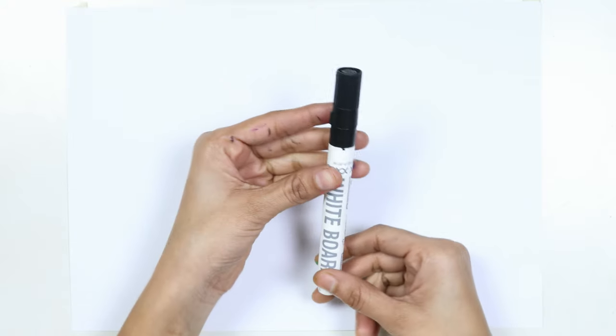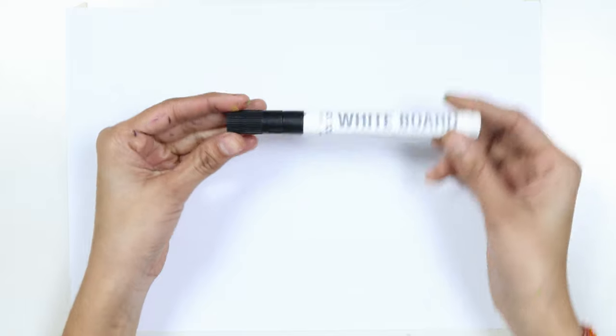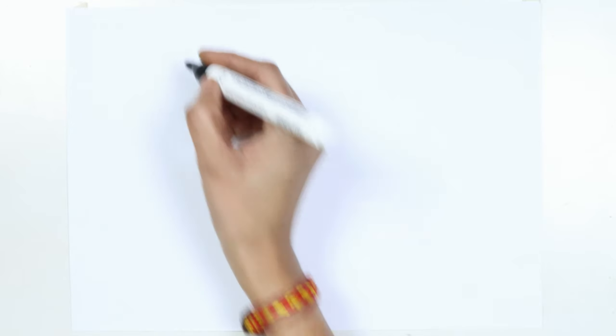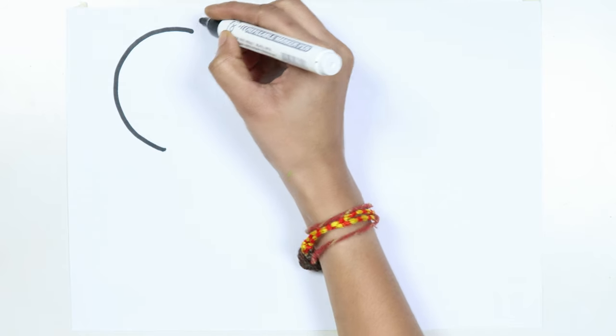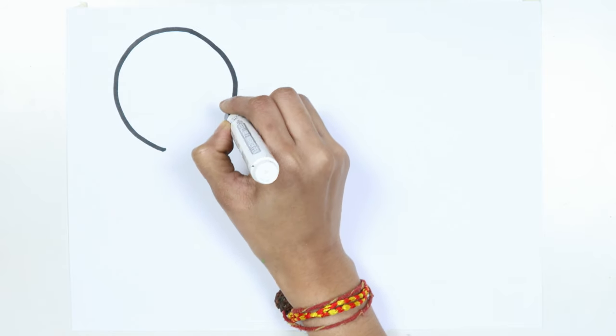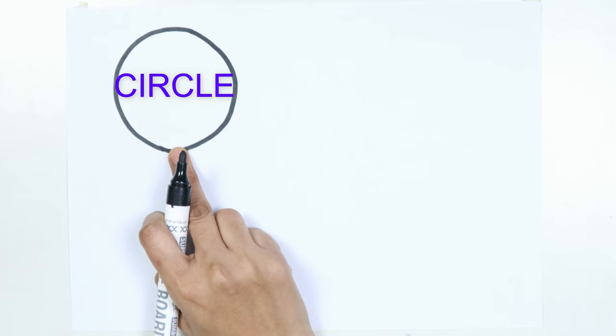This is the black color. Which color kids? This is the black color. Circle.